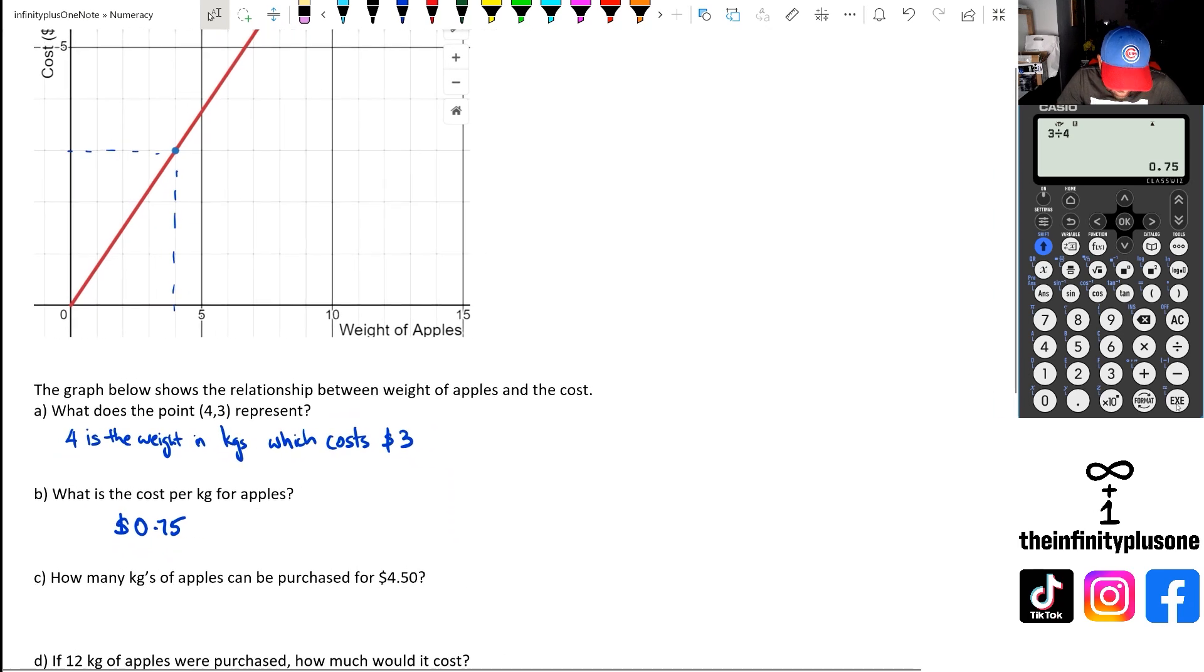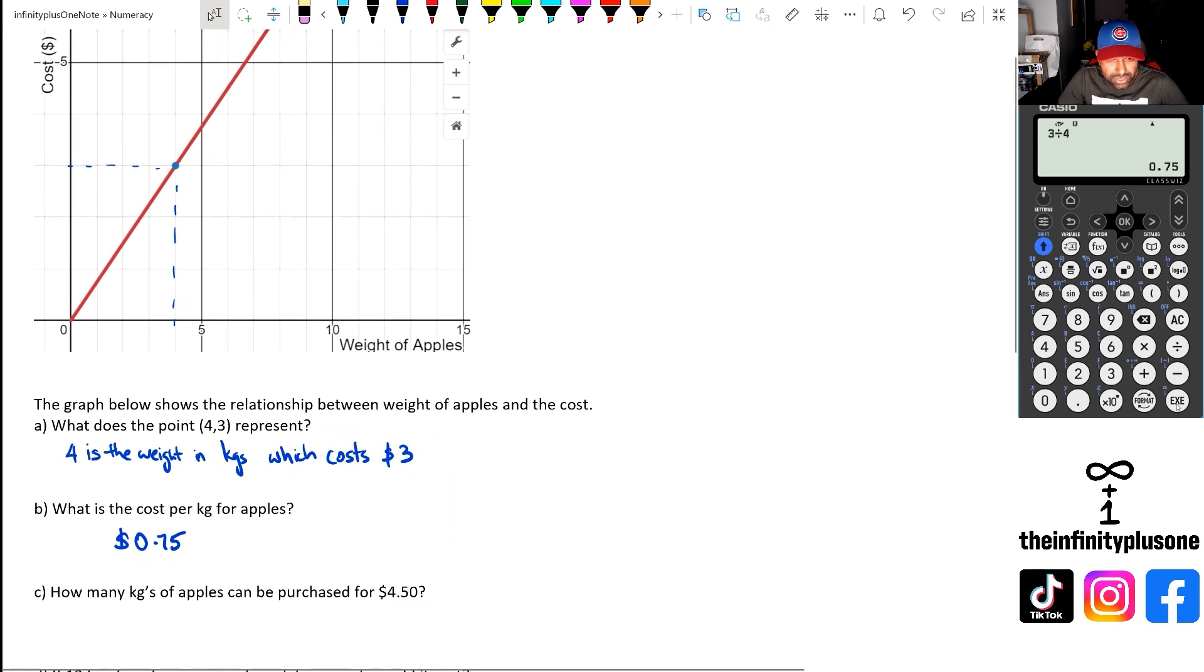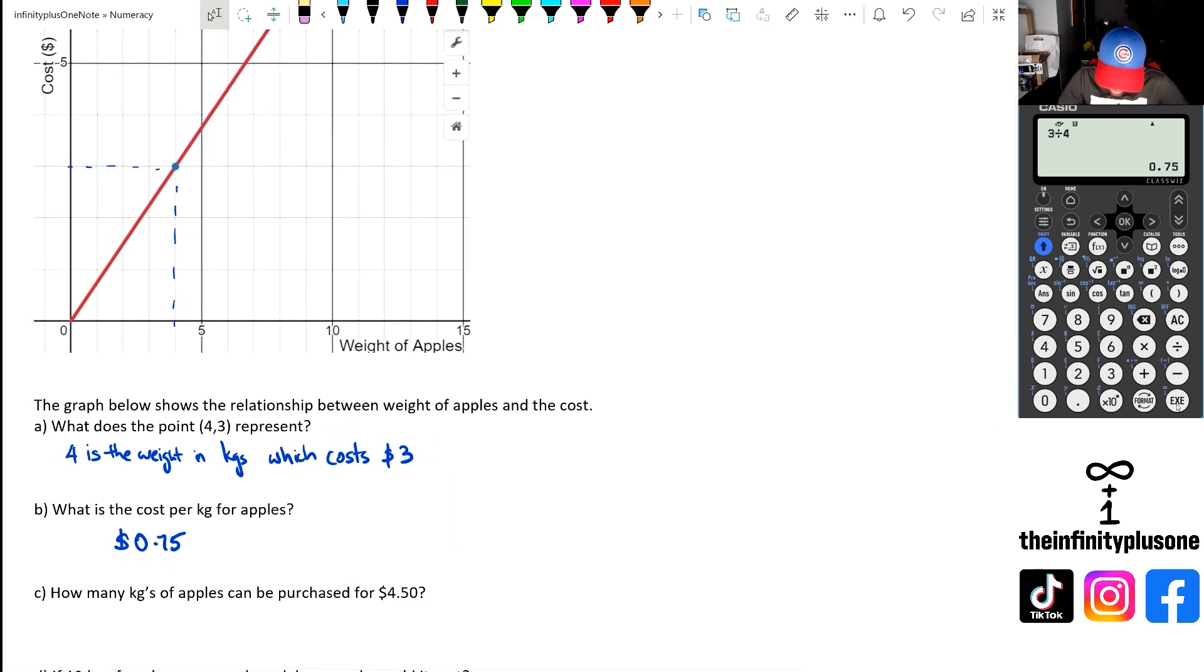Now, the next question says, how many kgs of apples can be purchased for $4.50? So for $4.50, we're simply going to do $4.50 divided by 75 cents. That's going to give us 6 kgs of apples that we could buy.